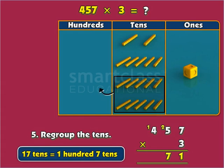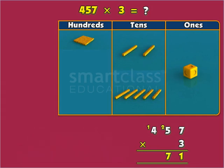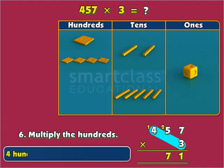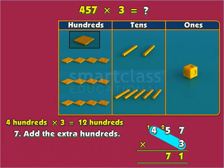Step 6. Moving on to multiplying the hundreds, 3 times 4 hundreds equals 12 hundreds. We had an extra hundred from regrouping the tens. So, adding the 100 to the 12 hundreds, we get 13 hundreds.